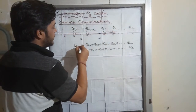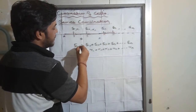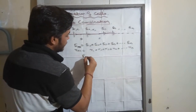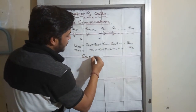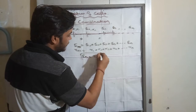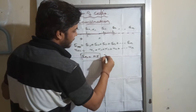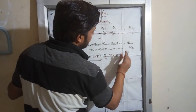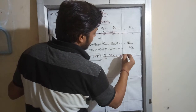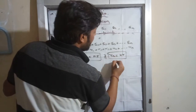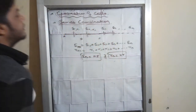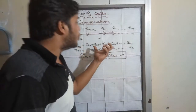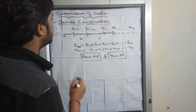And if all cells have the same magnitude, then in that case, E equivalent is equal to nE and R equivalent is equal to nR.